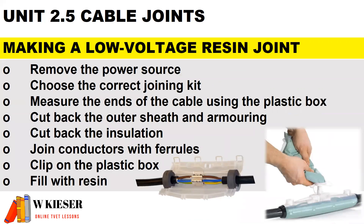When making a low voltage resin joint, also known as a Scotchcast type joint: first remove all power sources. Choose the correct joining kit, like a Scotchcast joint kit. Measure the ends of the cable using the plastic box. Cut back the outer sheath and armoring. Cut back the insulation. Draw conductors with ferrules. Clip on the plastic box and fill it with resin.